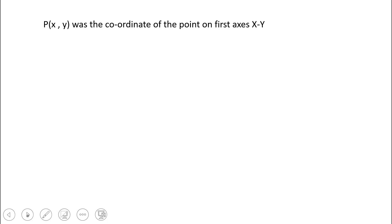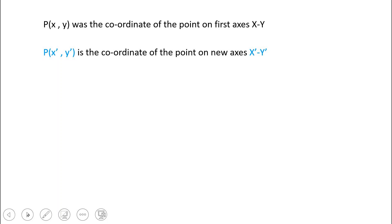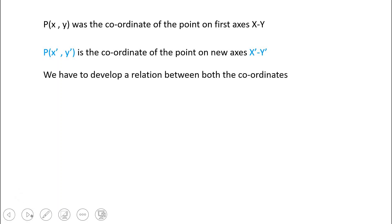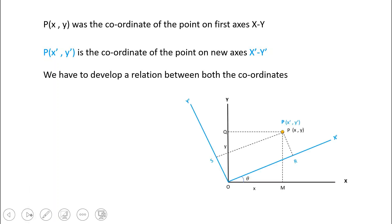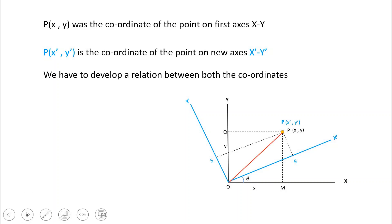P(x, y) is the coordinate of the point in the initial axis and P(x-dash, y-dash) is the coordinate in the new axis. We need to develop a relationship between x, y and x-dash, y-dash. To do this, I draw a line from origin O to point P, with the distance OP equal to R.